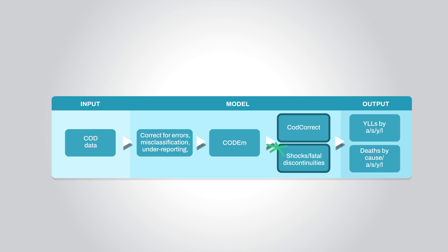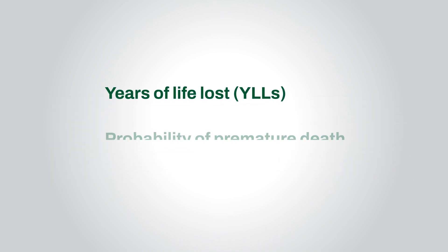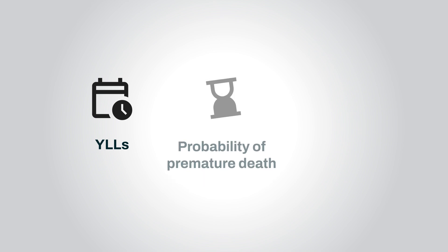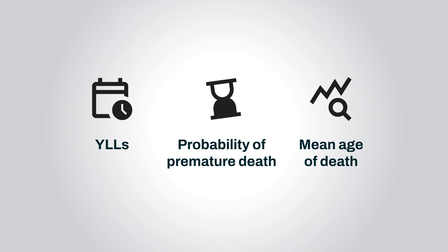Once we have the final cause-specific death rates, we are able to calculate a host of measures which help us better understand global death patterns. The key measures we focused on in this report are YLLs, probability of premature death, and mean age of death. YLLs are the product of the number of deaths for each cause-age-sex-location-year and the standard life expectancy at each age. We measured probability of premature death as the probability of dying before age 70. Mean age of death is calculated by first assigning the midpoint age of each age group for every death, followed by computing the mean of all midpoint ages across all deaths attributed to a given cause. We are able to measure premature death due to specific causes using this measure, advancing our understanding of the relationship between cause of death and age of death.